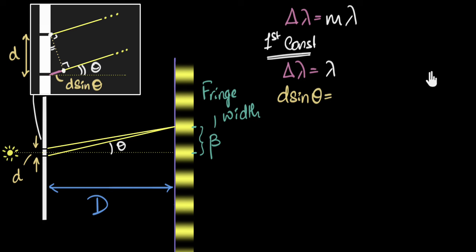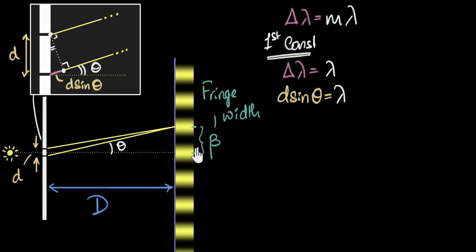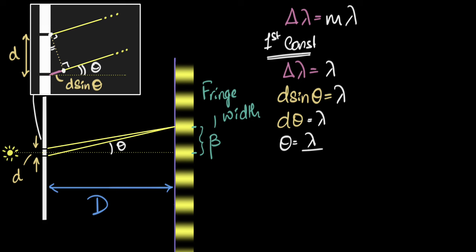Now, theta is incredibly small — usually just one or two degrees. When theta is small, we can use the approximation that sine theta equals theta in radians. So we can write d times theta equals lambda, and from this we can immediately get theta equals lambda divided by d. So we've found the angle subtended by the two bright spots.